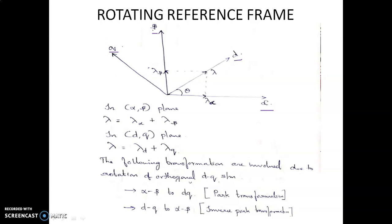Now we are going to study axes that are rotating at an angular speed. We are going to study the D-axis and Q-axis. These axes rotate at a certain angular velocity, and we need to model the induction motor using these concepts.